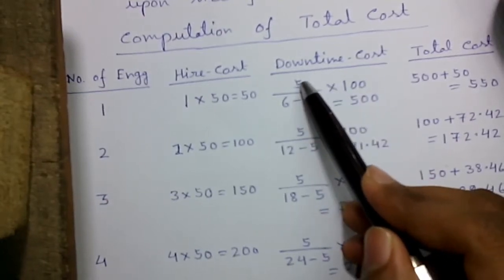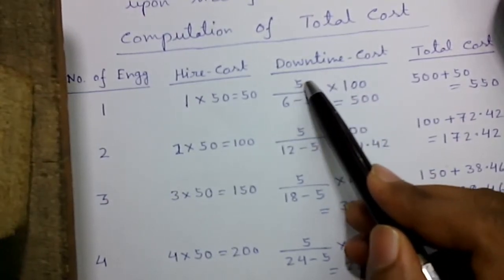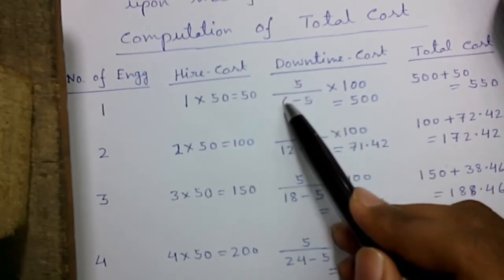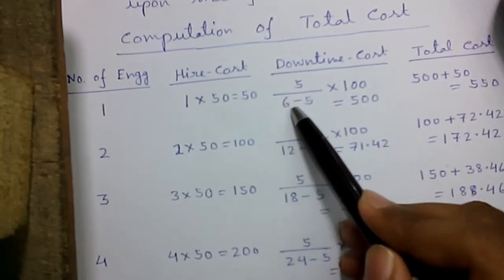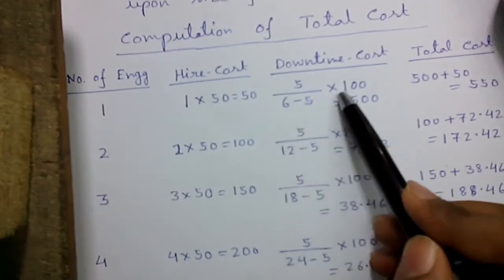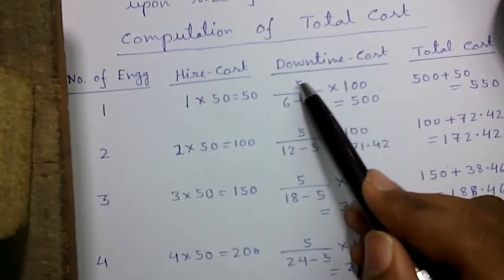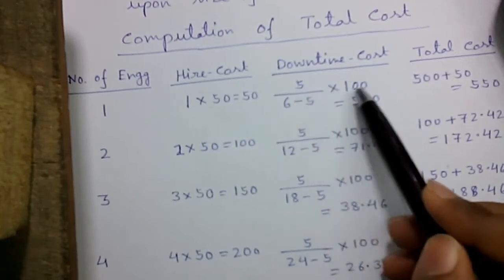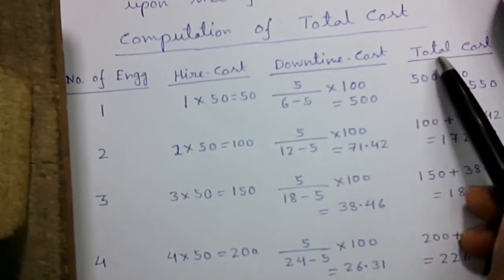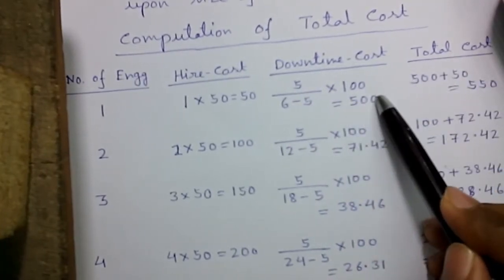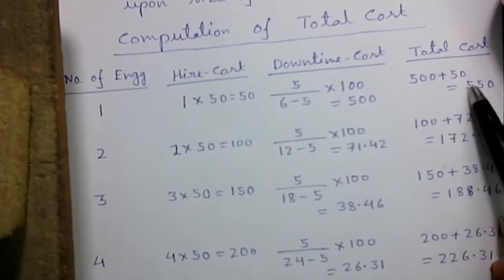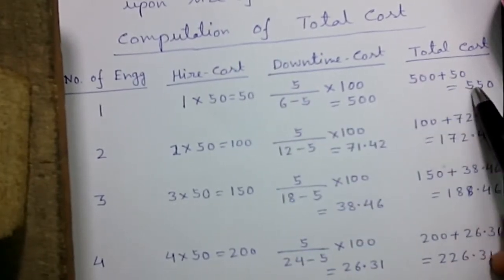5 is the average breakdown rate which is constant, and one engineer can repair 6 servers in an hour. 100 rupees is the breakdown cost per server. So that becomes 5 times 100 which is 500. The total cost is breakdown cost plus hire cost, which equals 500 plus 50, that is 550.